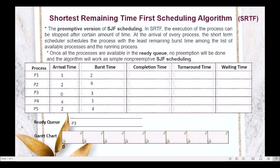Since it is only P3 in the ready queue at time 0, we allocate the CPU to P3. But instead of executing P3 for its full burst time of 3, since this is SRTF, we execute P3 for 1 unit of time. In the Gantt chart, P3 runs from 0 to 1. The remaining burst time of P3 goes from 3 to 2.